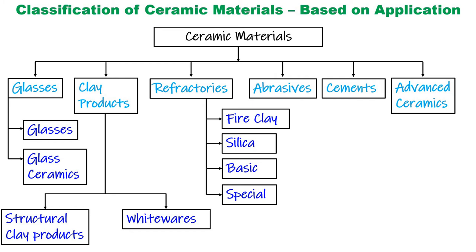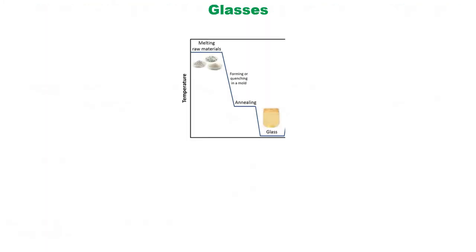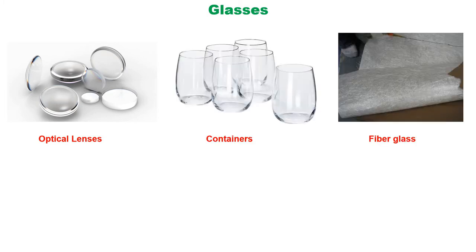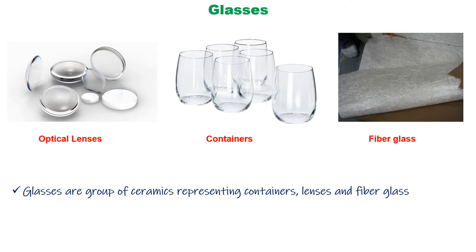Here we are going to see about the properties of each ceramic material and their applications. Generally, when we take any raw material and heat it to a higher temperature such that it becomes molten, and then when we suddenly cool it — which we call quenching — glasses are formed. When we see optical lenses, containers, or fiberglass, they are glasses formed by this process. These glasses are transparent and easy to fabricate, forming one kind of ceramic.